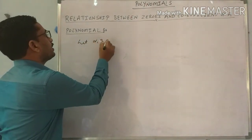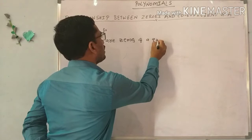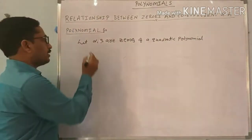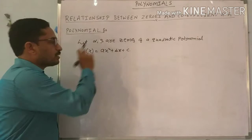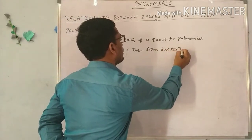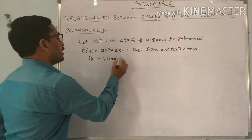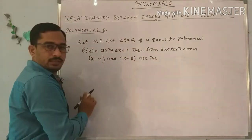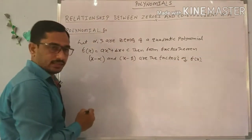Let alpha and beta be the zeros of a quadratic polynomial F of X equal to AX squared plus BX plus C. Then from the factor theorem, X minus alpha and X minus beta are the factors of the polynomial F of X.